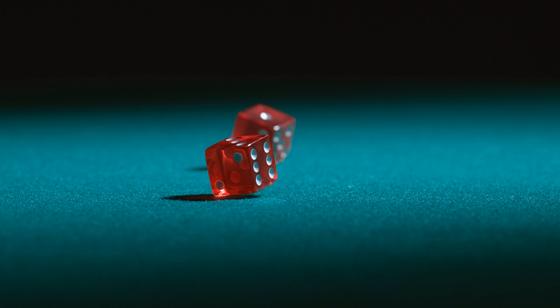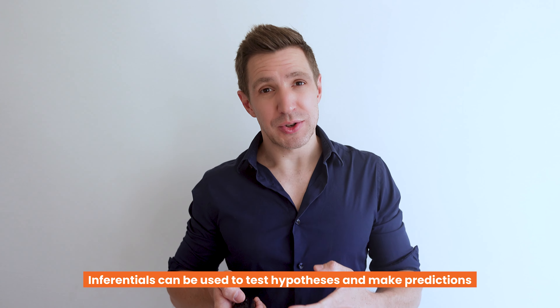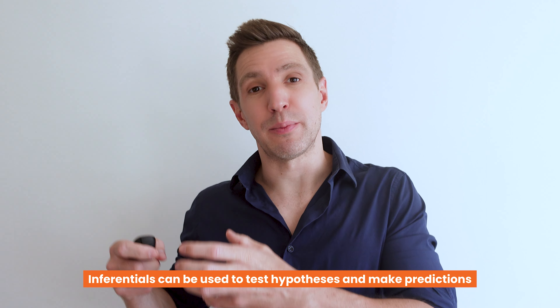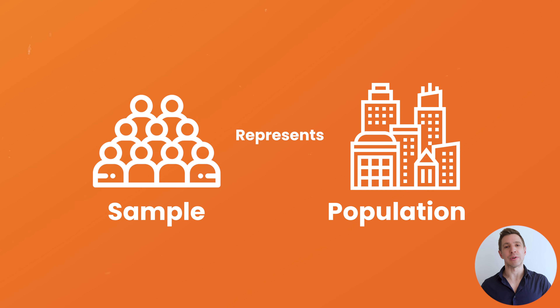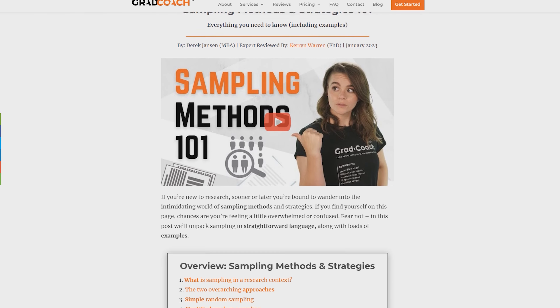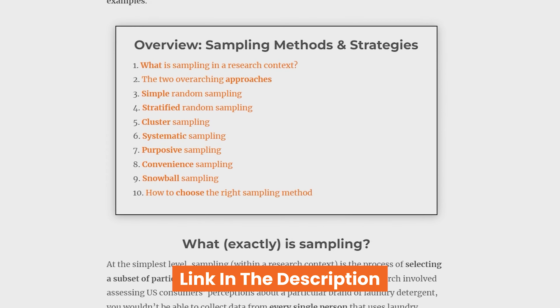In statistics speak, this question of 'is it real or is it just chance' is known as statistical significance. This ability to assess statistical significance means that inferential statistics can be used to test hypotheses, and in some cases they can even be used to make predictions. It's worth mentioning that all of this assumes that your sample is relatively representative of the population, which of course hinges on your sampling strategy.